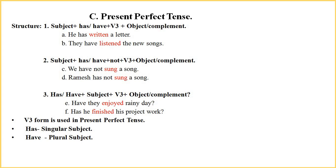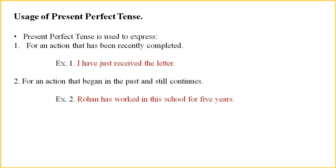Examples for interrogative sentences are: 'Have they enjoyed the rainy day?' and 'Has he finished his project work?' The third form of the verb is used in present perfect tense. 'Has' is used for singular subject and 'have' is used for plural subject. Present perfect tense is used to express an action that has been recently completed, for example: 'I have just received the letter.' It is also used for an action that began in the past and still continues, for example: 'Rohan has worked in his school for five years.'